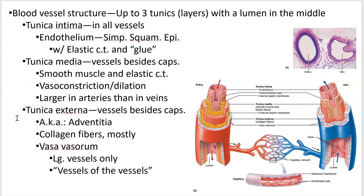The tunica externa, the outer layer, is a lot of connective tissue. You'll see it's also called the adventitia. The tunica intima is called the endothelium; the tunica externa is called the adventitia. This is mostly collagen fibers like you'd find in dense connective tissue. Some of the larger tunica externas can have their own blood vessel supply, and that's what's called the vasa vasorum, or vessel of vessels.